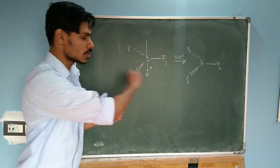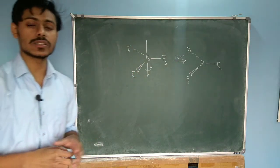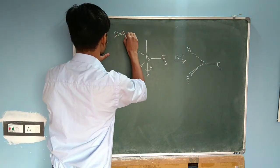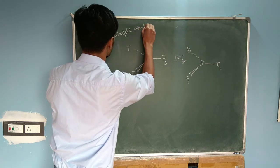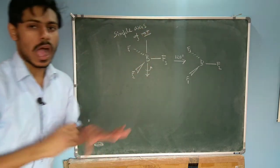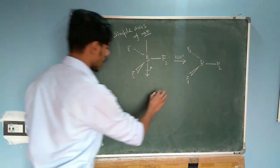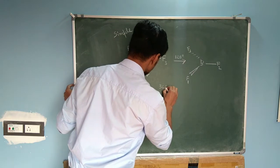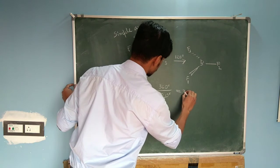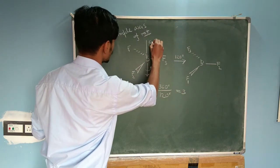This rotation operation is one of the symmetry operations and it is called the simple axis of rotation. To determine the order of this rotation, we divide 360 degrees by the angle of rotation — in this case 360 divided by 120 equals 3 — so this is called a C3 axis.